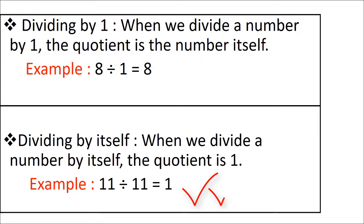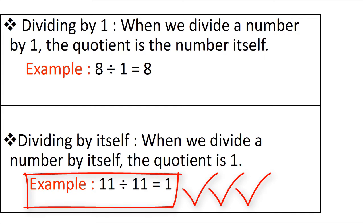Second property: dividing by itself. When we divide a number by itself, the quotient is always 1. For example, 11 divided by 11 is equal to 1. When both the numbers are the same, the answer is always 1. Suppose 11 objects are divided among 11 children — each child gets 1. So, when any number is divided by itself, the quotient is 1.